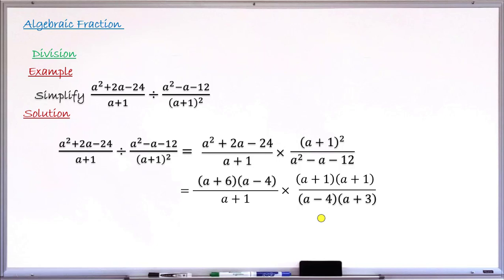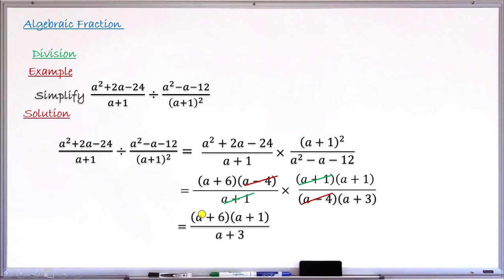Step three says: check for common factors between numerator and denominator. I can see (a − 4) appears in both, and (a + 1) appears in both. These are the common factors, so I cancel them out. (a − 4) cancels with (a − 4), and (a + 1) cancels with one (a + 1) from (a + 1)². What remains in the numerator is (a + 6)(a + 1), and in the denominator is (a + 3).